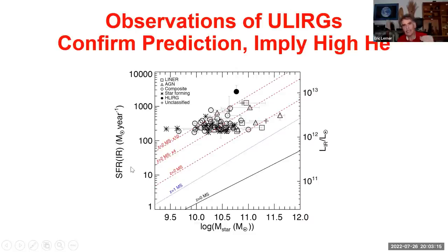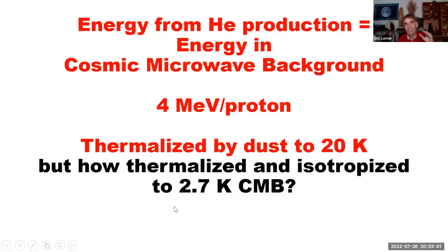The prediction that young galaxies were forming helium at an extremely high rate relative to their mass was borne out by the later discovery of the ultra-luminous IR galaxies, which are forming helium at a rate per unit mass about 100 to 1000 times that of the present Milky Way. It's been long known that the energy generated by the formation of a quarter of the helium in the universe — a quarter of the mass of hydrogen being converted into helium — by some strange coincidence produced the amount of energy that we now observe in the cosmic microwave background. We know that energy was thermalized by dust in early galaxies to about 20 K, but how was it thermalized further to 2.7 K? Well, again we go back to plasma phenomena.